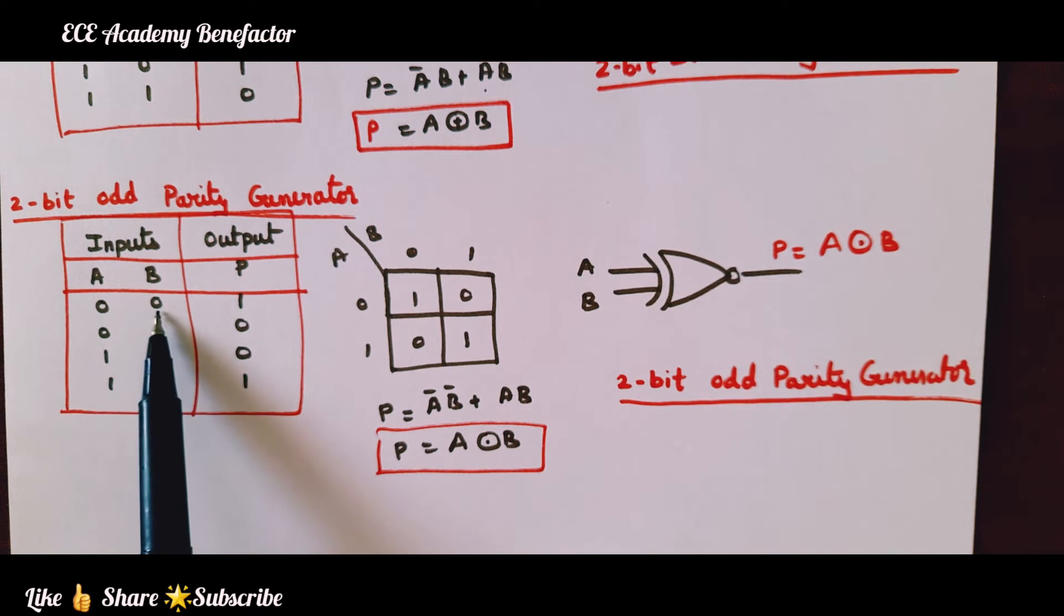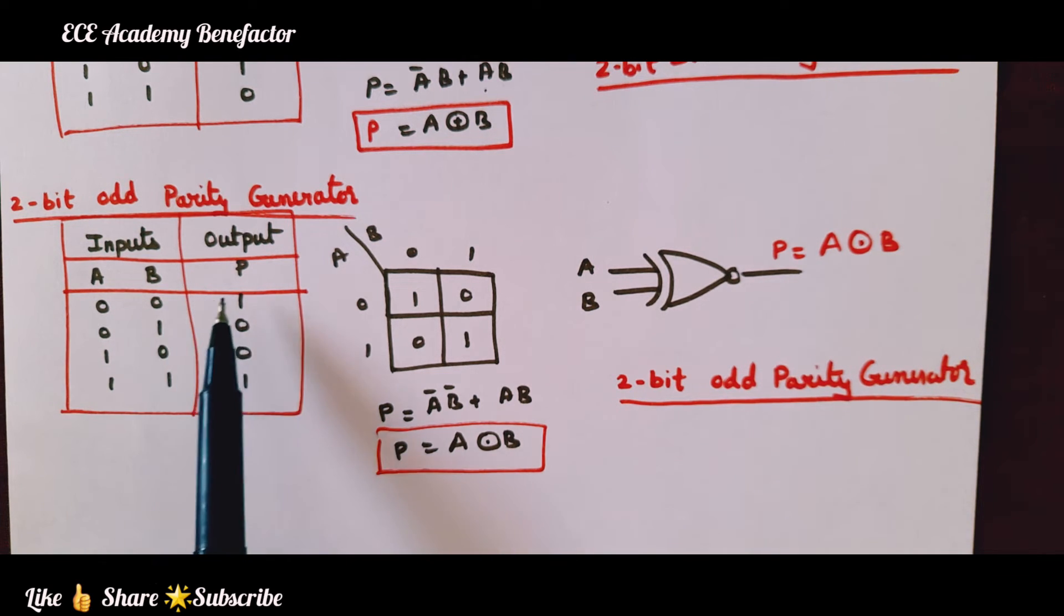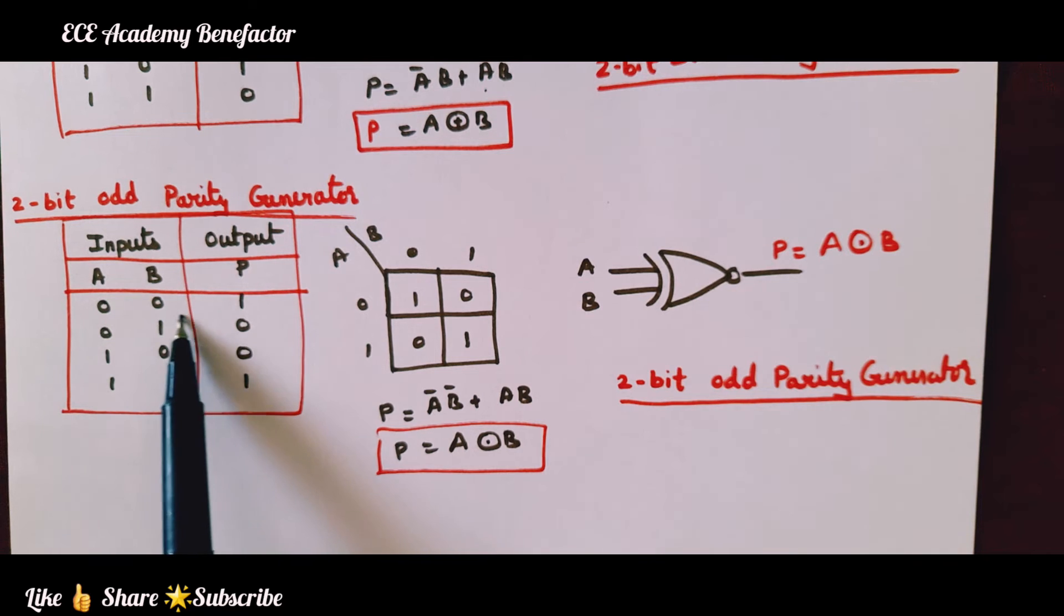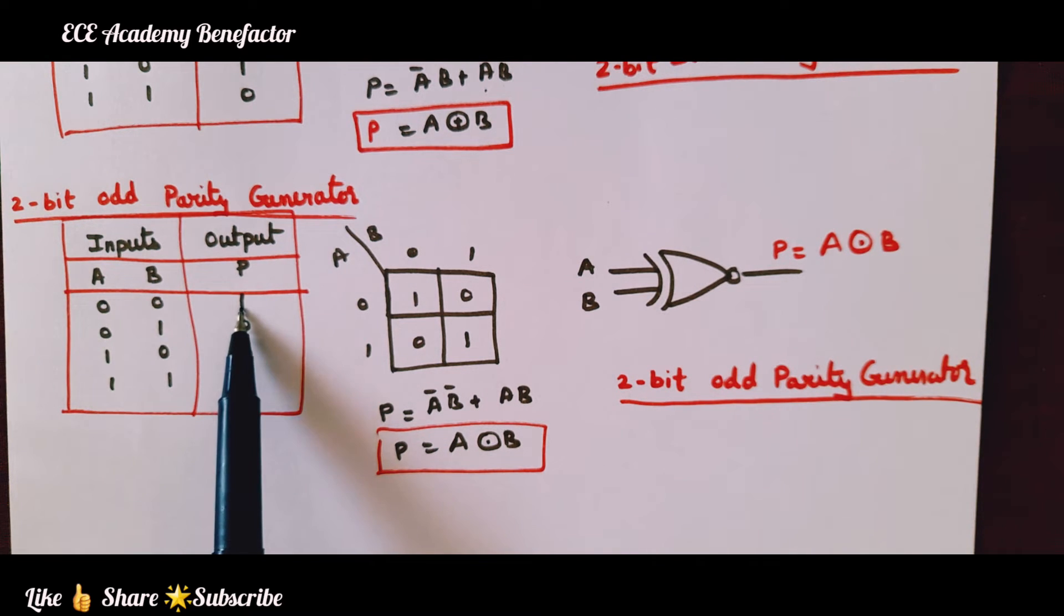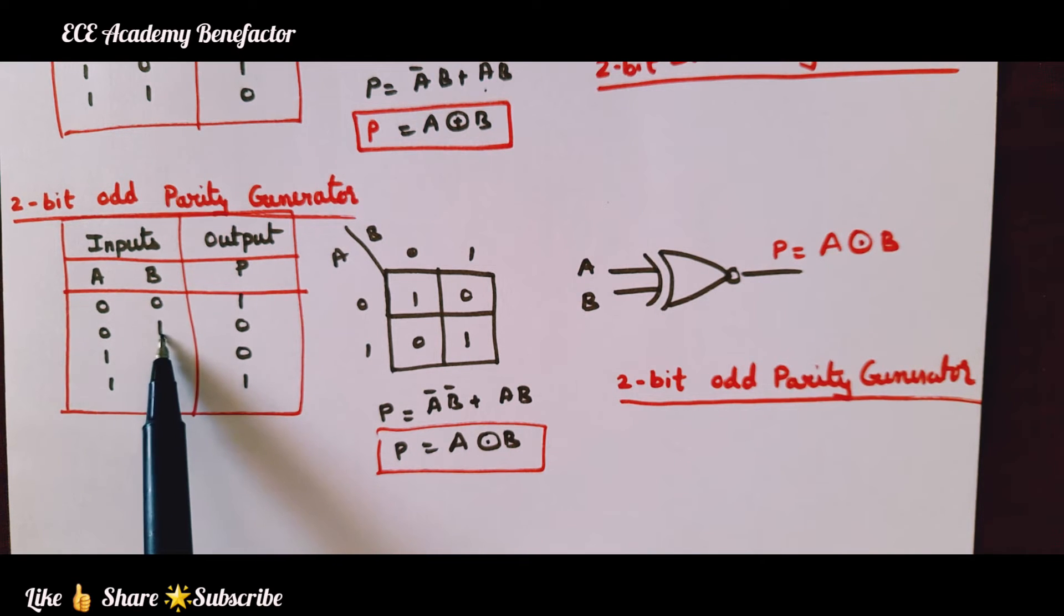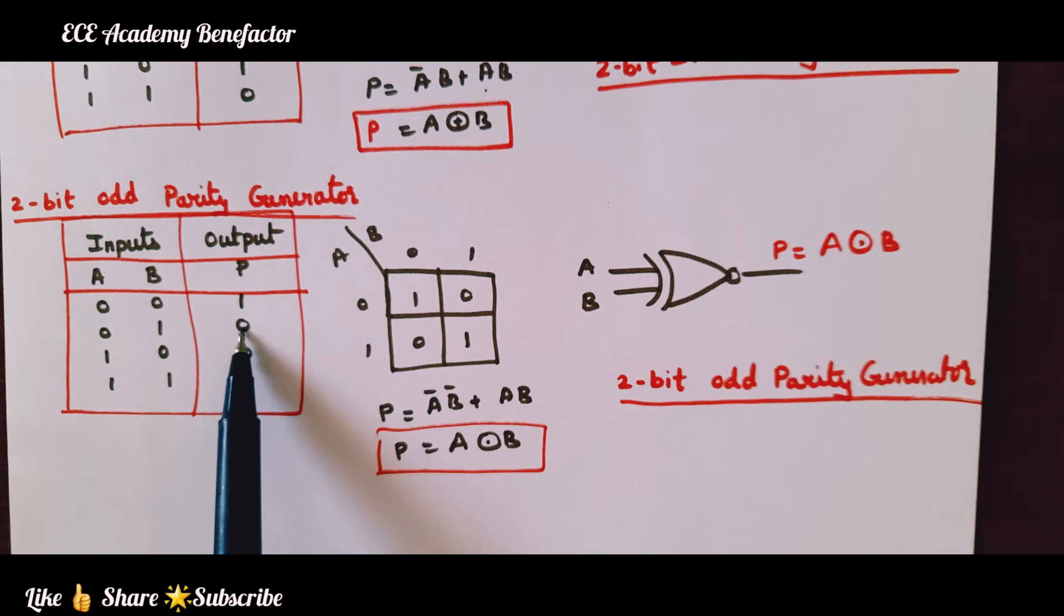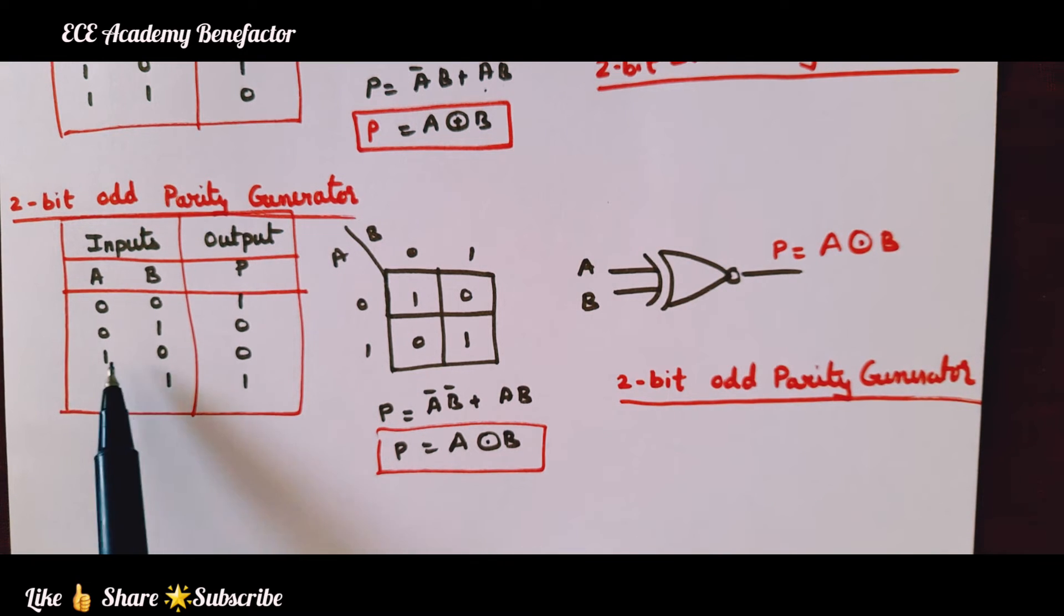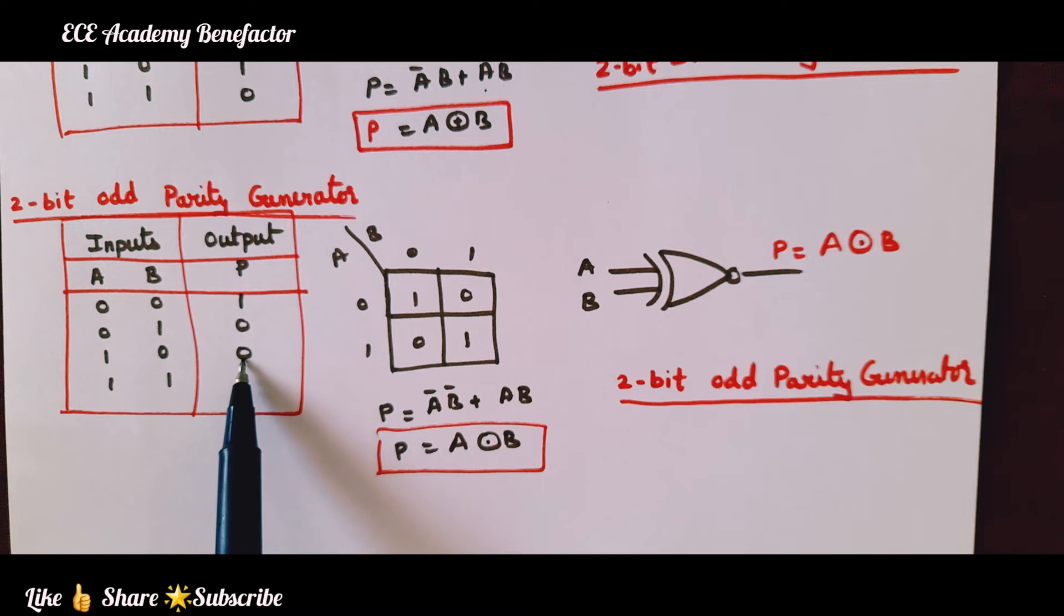What is our design? Odd parity. So the parity generated will be 1, so that when this information is transmitted it is having odd number of 1s. 0,1 this input is having odd number of 1s, so parity will be 0. 1,0 for this information input the number of 1s is 1, odd, so the parity will be 0.